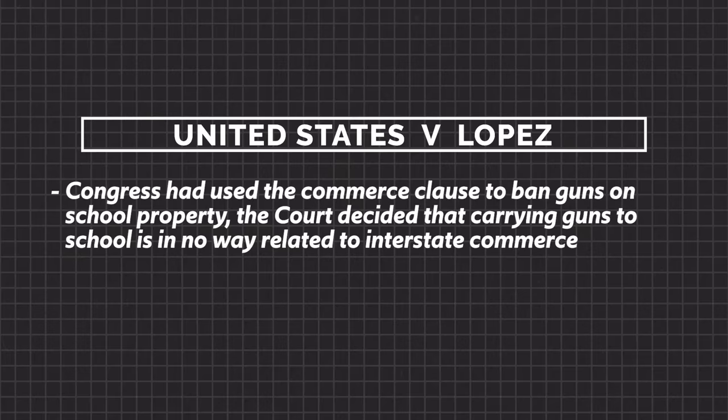The second case is United States v. Lopez in 1995 — an example of the balance of power tipping towards the states. Congress had used the Commerce Clause to ban guns on school property, but the Court decided that carrying guns to school is in no way related to interstate commerce, and thus Congress had overstepped its bounds into state authority, providing a win for state power.